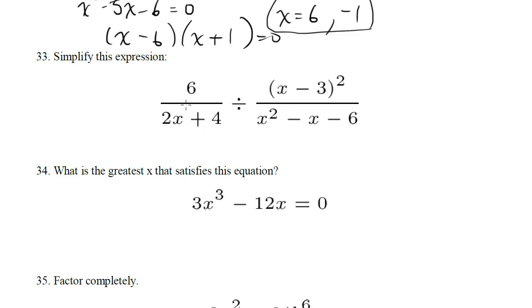Simplify this expression. Let's start doing some factoring. This 6 we're going to leave alone. This 2x plus 4, let's factor out a 2, so this will become 2 times x plus 2.